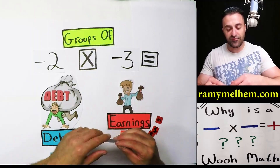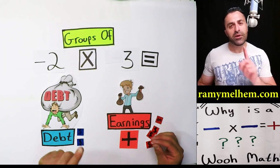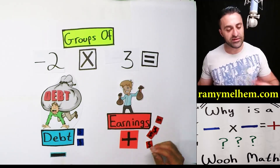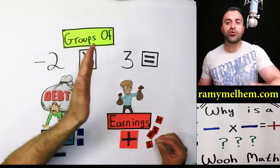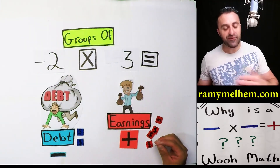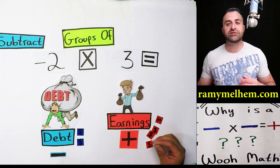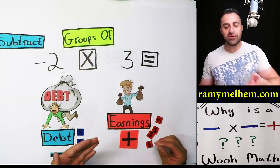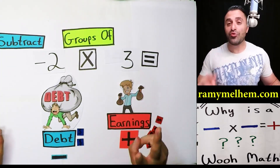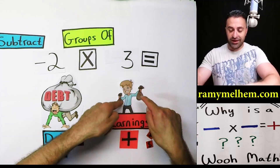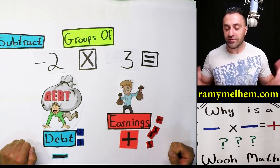In the first number in multiplication, since we're talking about groups, if it's a negative, it's telling us to subtract groups. Subtract two groups of three — what does that mean? It means find two groups of three, find them, and subtract them out of the guy's hands. That's what it means.